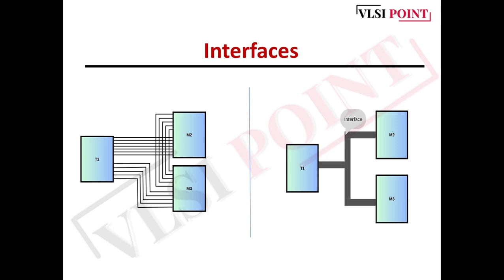At the SOC level, we basically instantiate IPs and make a lot of connections. There will be hundreds of IPs in an SOC, and to connect those ICs you need to make approximately thousands of connections. If you are going to make all those connections in terms of ports and signals, it's going to be very error-prone and time-consuming. To avoid that, we use interfaces — an interface is nothing but a bunch of signals and we don't really need to connect everything port by port.